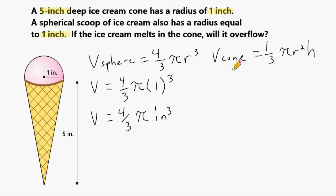Let's take a look at the cone here. The volume of the cone is equal to 1/3 pi times radius, radius. In this case the radius is 1. And we have to square that and then multiply by the height of the cone, which is 5 inches.